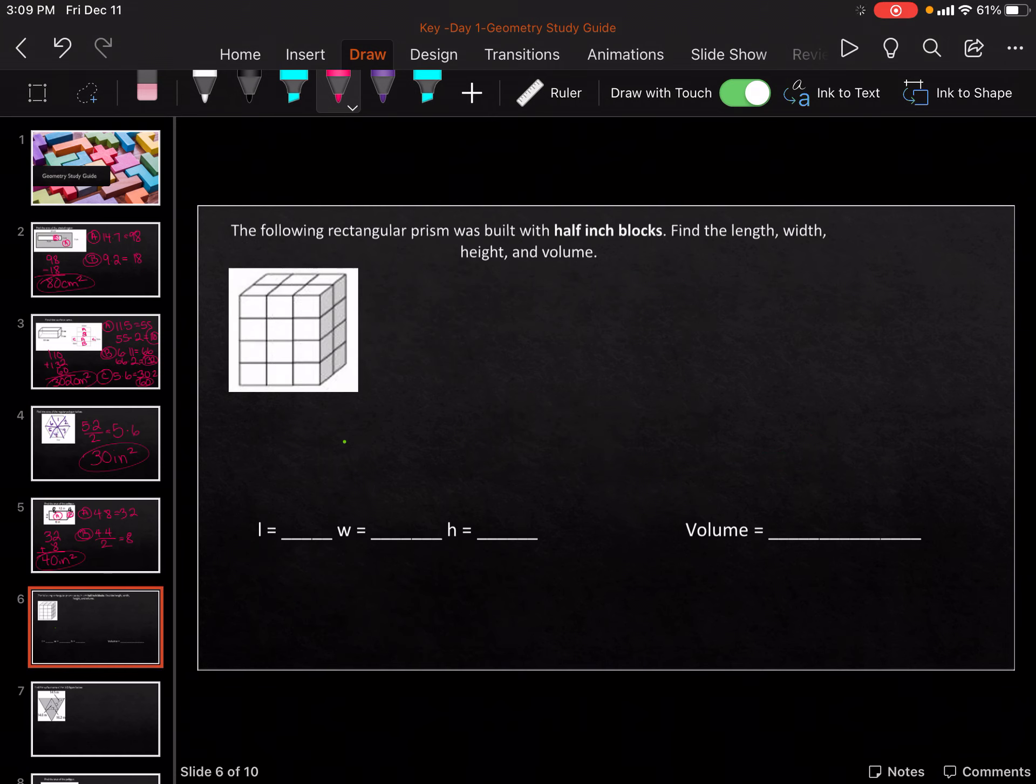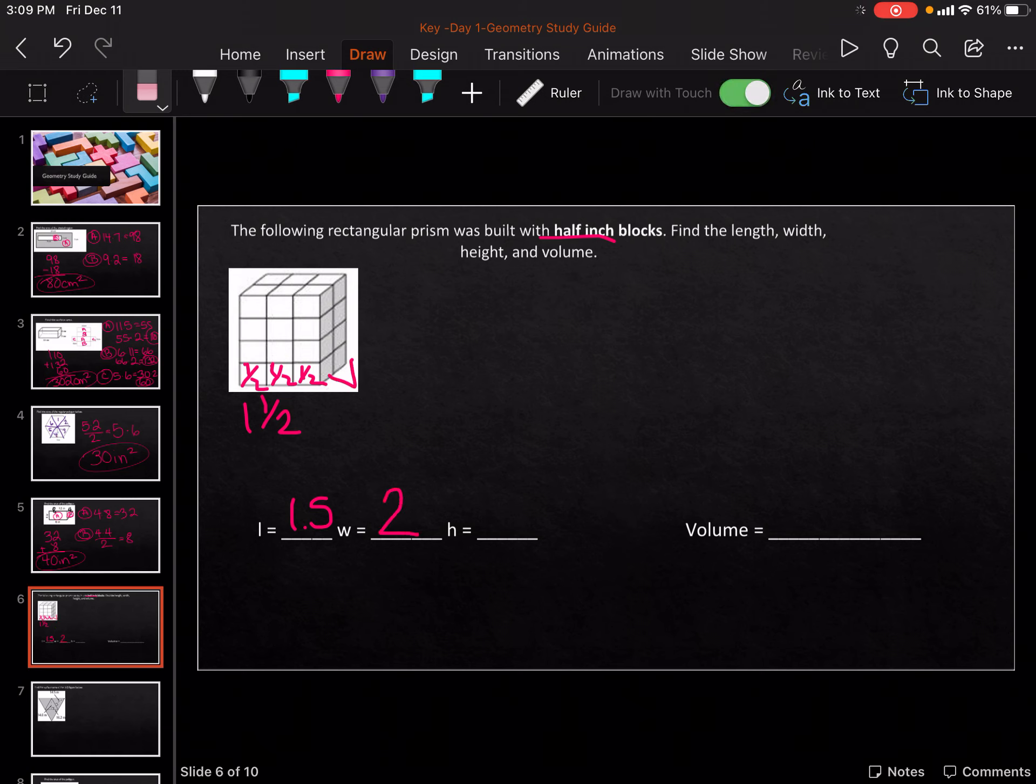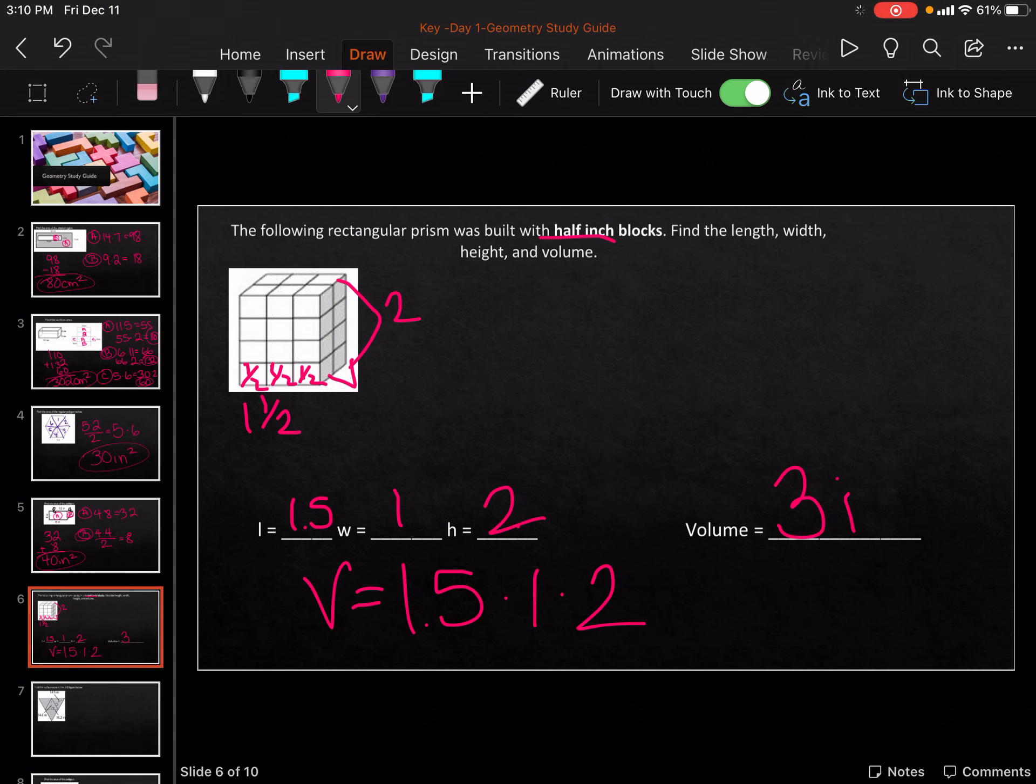So for this one, it was built with half-inch cubes. So each one is 1 half. So 1 half plus 1 half is 1 and 1 half, which is also 1.5. Then the width is 2. Then going up is 1 half plus 1 half plus 1 half plus 1 half is 2. So for volume, it's 1.5 times 1 times 2. 1.5 times 2 gives me 3 inches cubed.